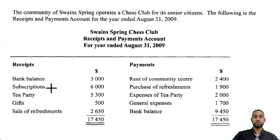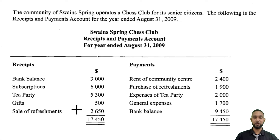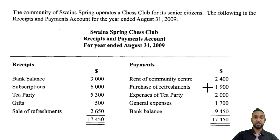So you have a regular opening balance. Subscriptions are like membership fees — that's the major source of revenue for clubs — and they also have fundraisers and donations. Tea party would be a fundraiser, gifts are like donations, and sale of refreshments as well. They'll probably have some kind of cafeteria on their premises. On the payment side you have rent of community center, purchase of refreshments, expenses of tea party, general expenses, and a closing bank balance.